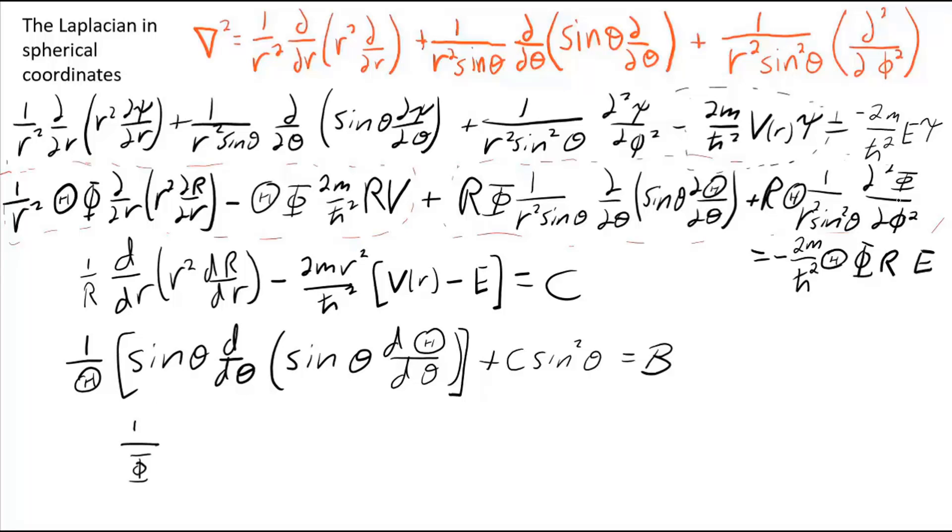The theta term and the phi term both need to be equal to this constant B. For the phi term, we're simply going to have the second derivative of phi equals phi, which is a simple enough equation to solve. Constants always result from separation of variables. The number of constants equals the number of variables minus one.